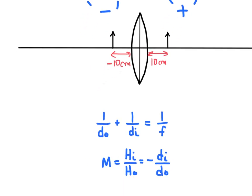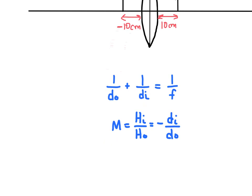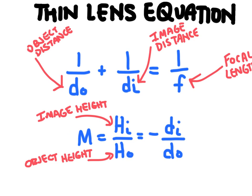Here's the change we make to the equations: I put a negative sign on the object distance term and change the negative sign in the magnification equation to a positive. That gives us the thin lens equation. The only difference between these equations and the mirror equation is just those sign changes.